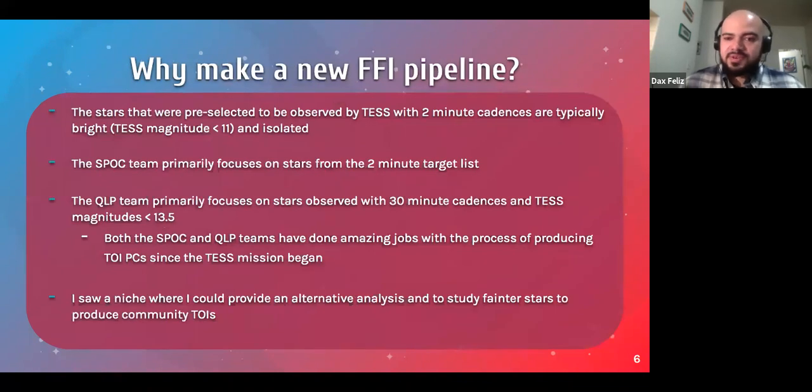But then that brings the question of, okay, how do we get this data? So there are several full-frame image pipelines that exist already. But the problem comes down to the target selection that these pipelines focus on. So as I mentioned earlier, there are two modes of observation that TESS operates in. The stars that are preselected to be observed every two minutes are typically very bright and isolated, meaning there's no other nearby stars.